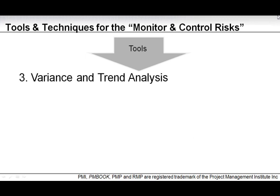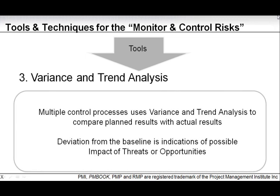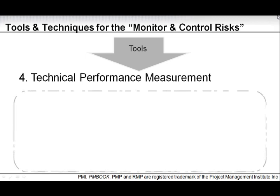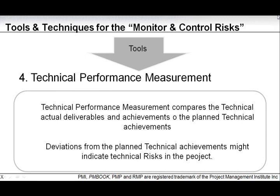Variance and trend analysis: multiple control processes use this technique to compare planned results with actual results. Deviation from the baseline is an indication of possible impact from threats or opportunities. Technical performance measurement compares actual technical deliverables and achievements to planned technical achievements. Any deviation from planned technical achievements might indicate that you have technical risks in the project.